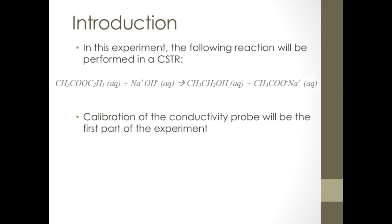In this experiment, the following reaction will be performed in the CSTR. There will be electrical conductivity present in the system due to the ions that form from the reactant, sodium hydroxide, and the product, sodium acetate. Initially, only sodium hydroxide contributes to the conductivity, but as the reaction proceeds, both sodium hydroxide and sodium acetate will contribute, which can give us a means of determining conversion.